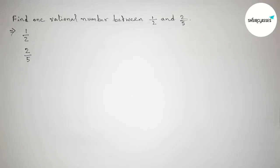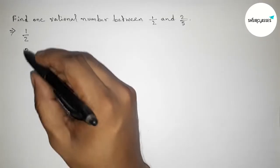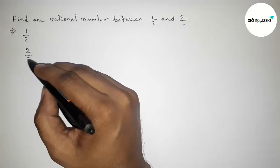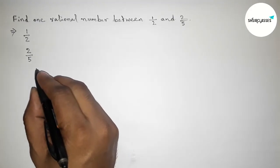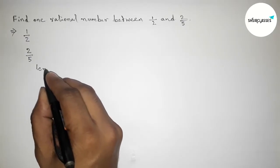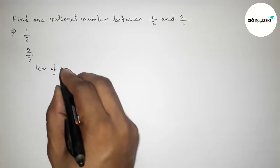Now here both the denominators are not the same, so we have to make equal denominators. For equal denominators, we have to find the LCM of 2 comma 5. So now I am going to find LCM of 2 comma 5.